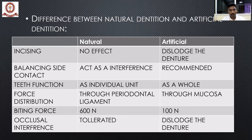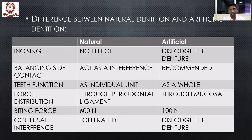Regarding biting force: natural dentition biting force is 600 Newtons, whereas in complete dentures it is only one-sixth of that — approximately 100 Newtons. Regarding occlusal interference: in natural dentition a small interference can be tolerated, but in complete dentures even a small occlusal interference causes instability — the denture tends to fall when the patient speaks or chews. These are the major differences between natural and artificial dentition.